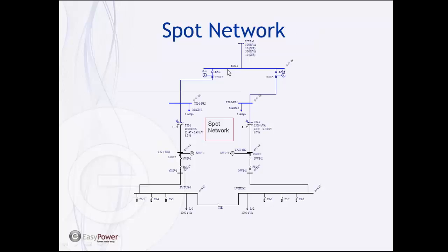Here we have modeled a 12.47 kilovolt system. You've got cables feeding transformers, and these are two primary feeders — separate. The transformer is connected to a network protector, which is a circuit breaker activated by network protector relays, which are slightly different from regular overcurrent relays. Then they feed to a bus, and these two buses are parallel. In this example, we've got a tiebreaker between the two buses, but in some cases you can also have just one single bus fed from both transformers. Then you have fuses going out to the customer load centers.